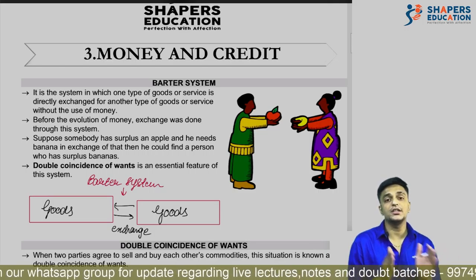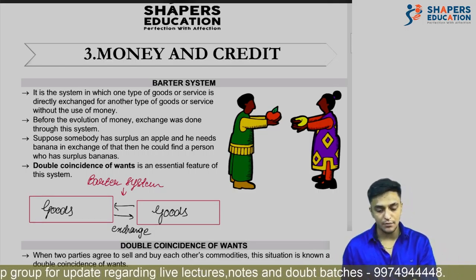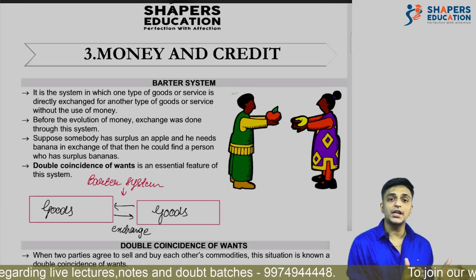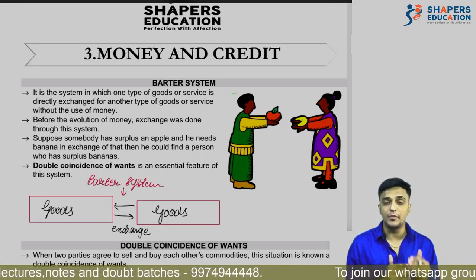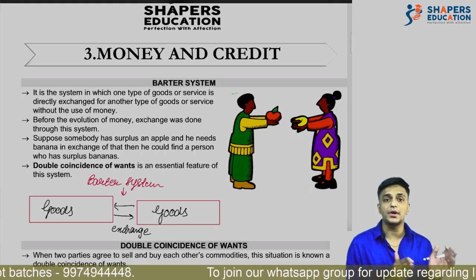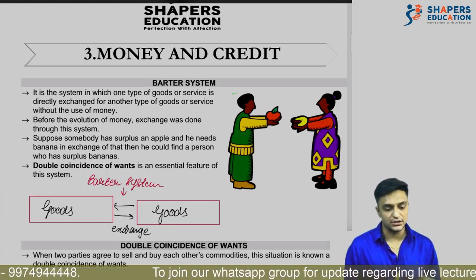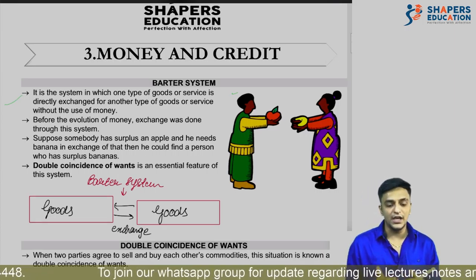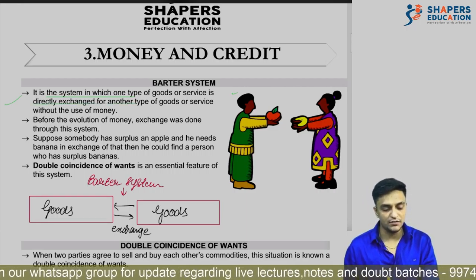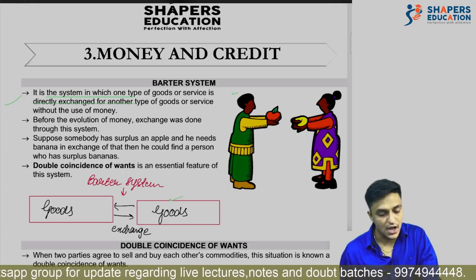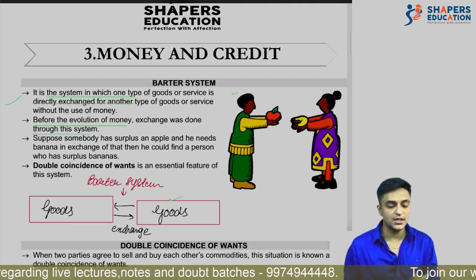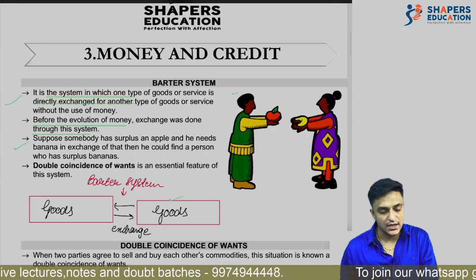When goods or any commodity is exchanged for another commodity, we call that the barter system. Here, for example, apples are being exchanged for bananas — where commodity is exchanged for commodity with no involvement of money. We call this the barter system, which was practiced in olden times before the invention of money. Goods were exchanged for goods.